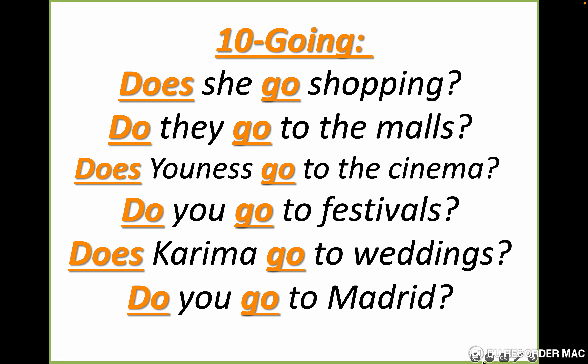This is the last group of examples, using the verb 'go.' Does she go shopping? Do they go to the malls? Does Eunice go to the cinema? Do you go to festivals? Does Karima go to weddings? Do you go to Madrid? Let's repeat: does she go shopping? Do they go to the malls? Does Eunice go to the cinema? Do you go to festivals? Does Karima go to weddings? Do you go to Madrid?